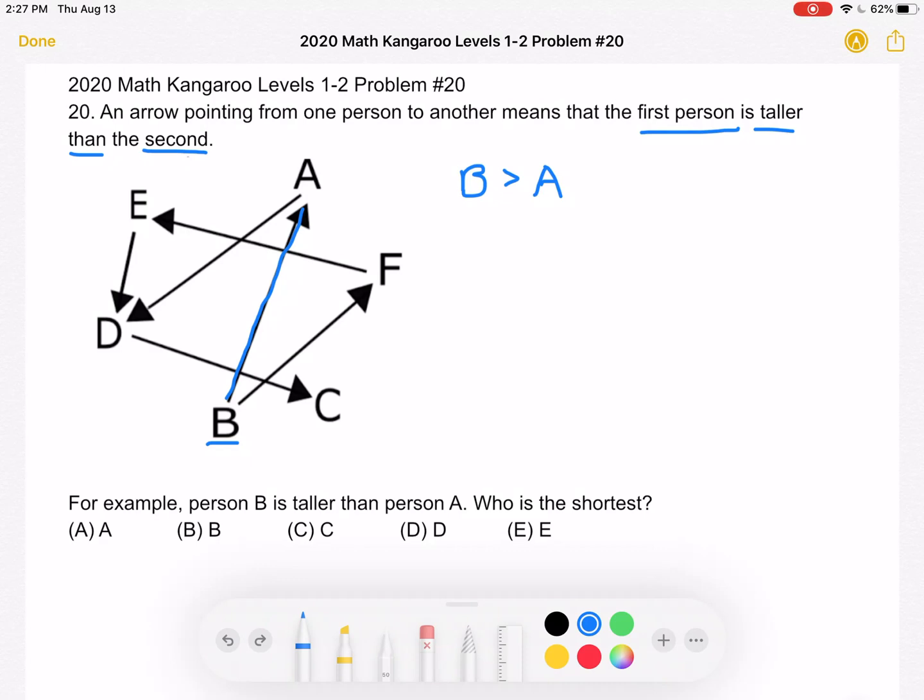Okay, now from person A, we have an arrow that goes from A to D, which again means that A is taller than person D.